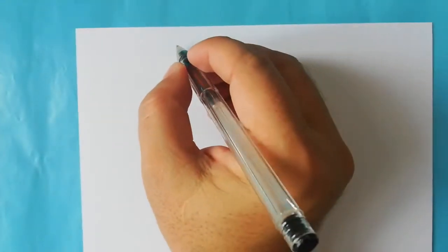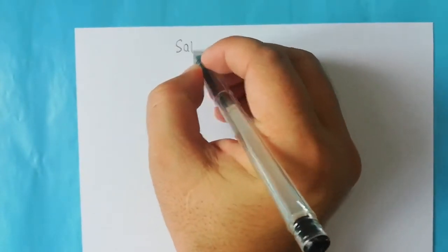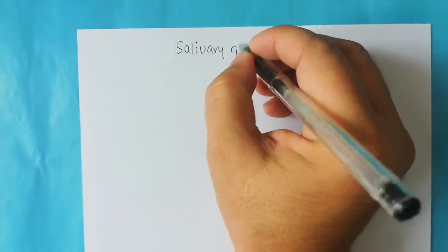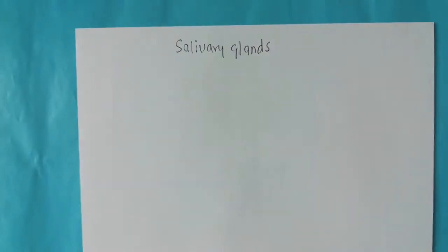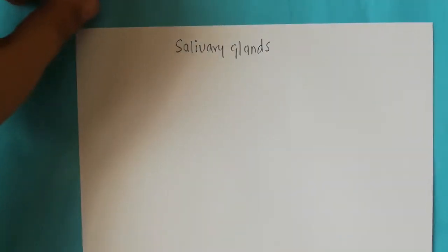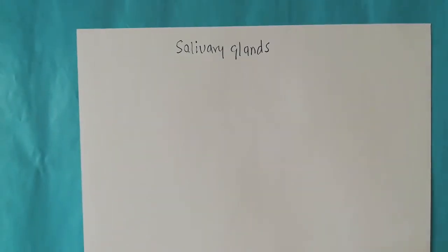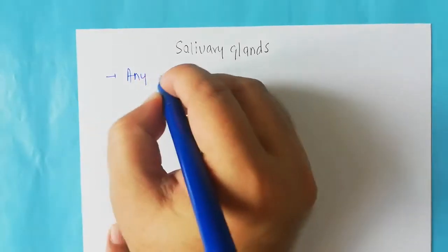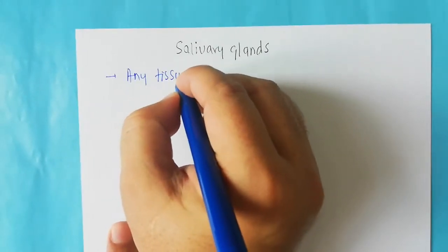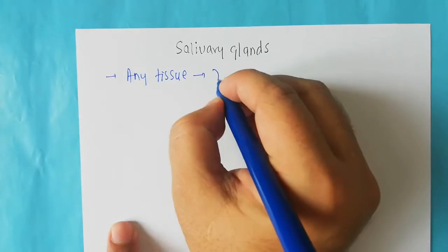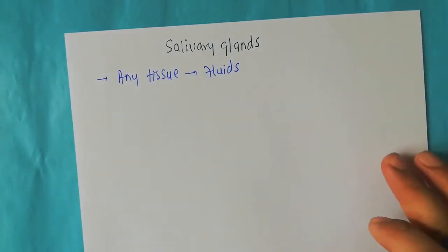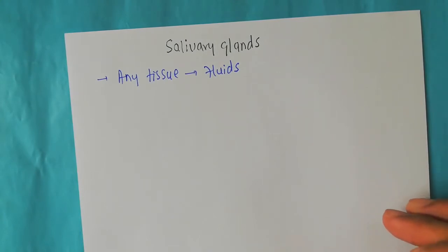Welcome back to this next video. In this video we are going to talk about the salivary glands. The first thing you need to understand is what are glands. We usually say that any tissue in your body which secretes some kind of fluids is known as a gland.